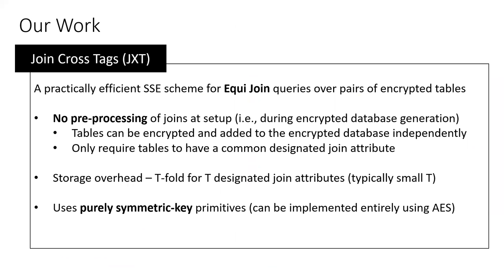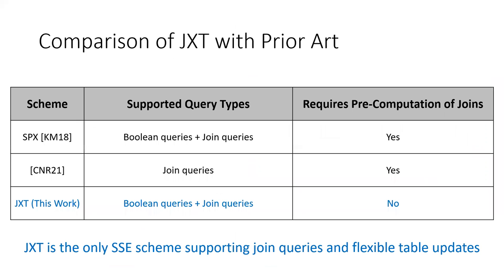JXT is a purely symmetric key primitive, which makes it practically efficient and highly scalable to extremely large encrypted databases. JXT is in fact the only SSE scheme till date to support join queries with no preprocessing of joins while allowing flexible table updates.